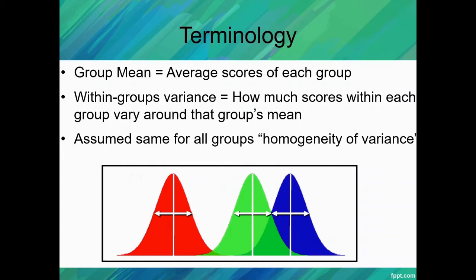When we're thinking of an ANOVA, a couple of things that we should know is the terminology for group mean. So a group mean - now this is the average score of each group. So this is a group mean, this is a group mean, and this is a group mean, right here down the center.